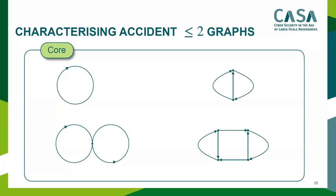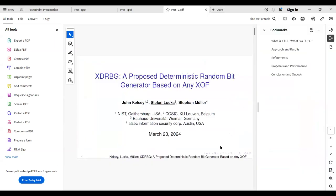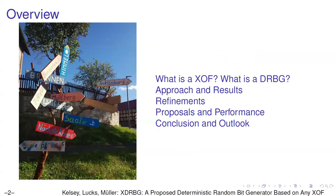The next and last talk of today is about XDRBG — a proposed deterministic random bit generator based on any XOF. The talk is given by John Kelsey, Stefan Lux, Stefan Miller, and the presenter is Stefan Lux.